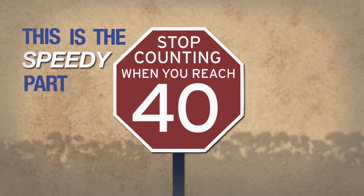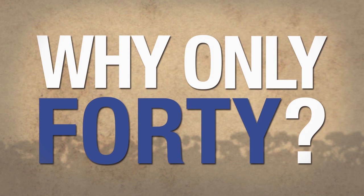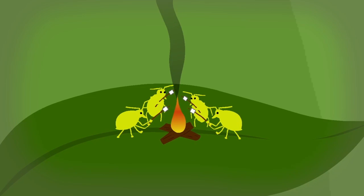This is the speedy part of speed scouting. Why only 40? Well, this isn't a lower threshold number for soybean aphid, but it is a good indicator that a larger problem might exist. Kind of like the saying, if there's smoke, there's fire.